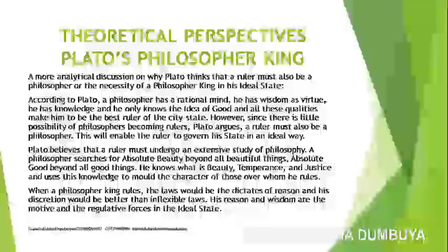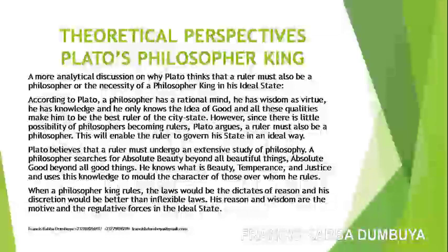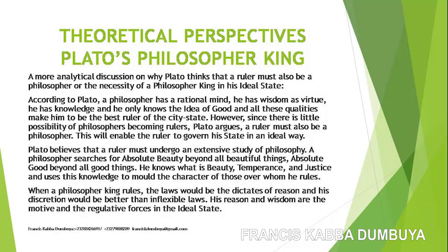The first theoretical perspective is Plato's philosopher king's theory. According to Plato, a philosopher has a rational mind, wisdom, virtue, and knowledge, and only knows the ideal of good. All these qualities make him the best ruler of the city-states. However, since there is little possibility of philosophers becoming rulers, Plato argues a ruler must also be a philosopher. This will enable the ruler to govern his state wisely.